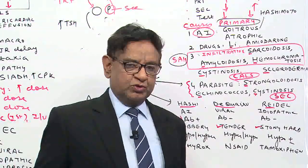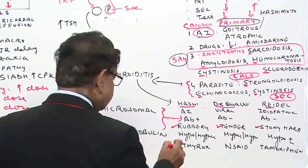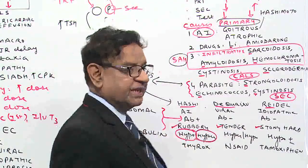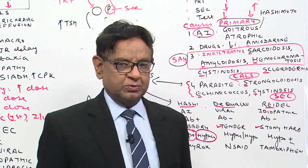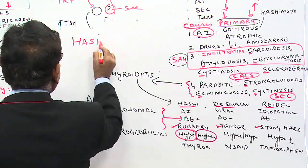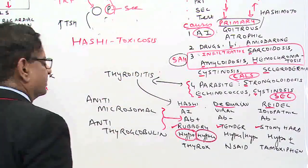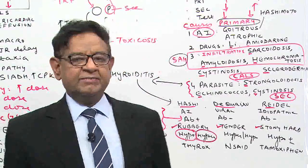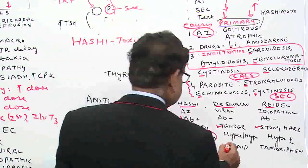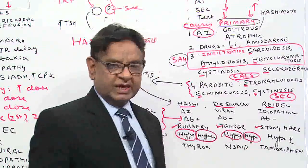Very interestingly, regarding thyroid function tests: Hashimoto's patients are usually hypothyroid, but sometimes they even manifest as hyperthyroid — this is known as Hashitoxicosis. As far as De Quervain's, patients usually start hyperthyroid and later on become hypothyroid.